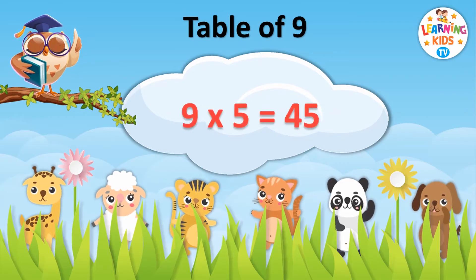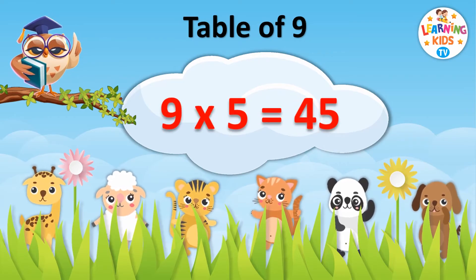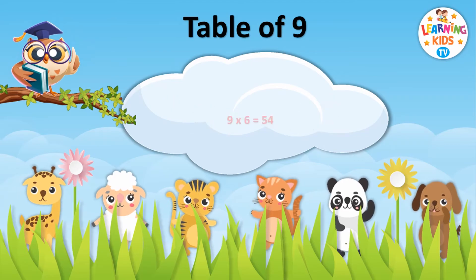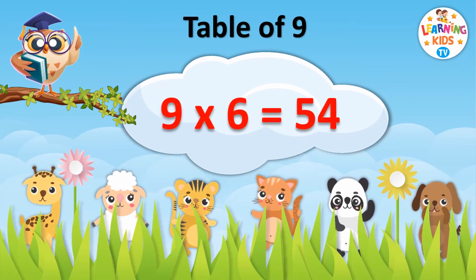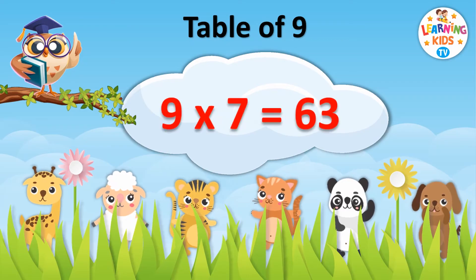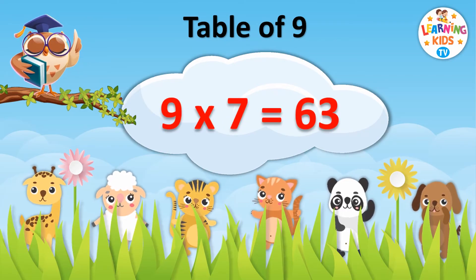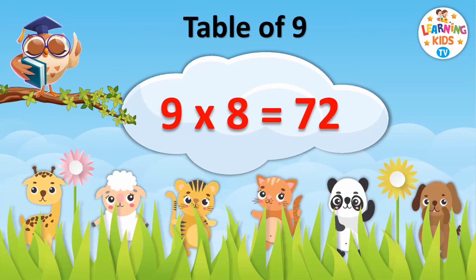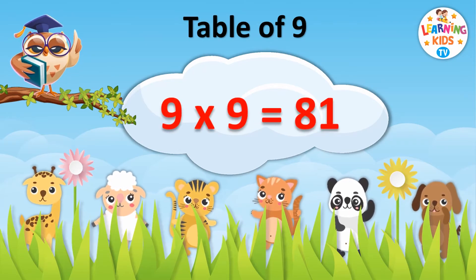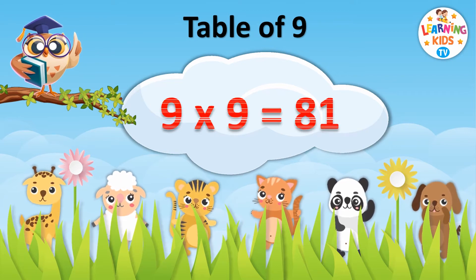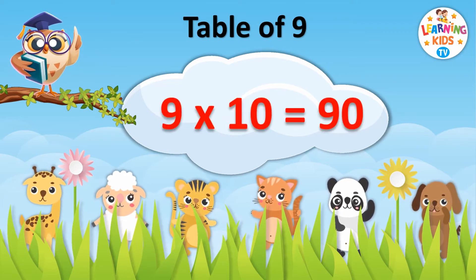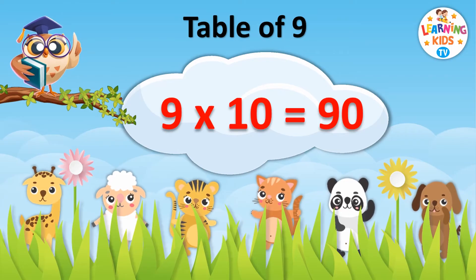Nine fives are forty-five. Nine sixes are fifty-four. Nine sevens are sixty-three. Nine eights are seventy-two. Nine nines are eighty-one. Nine tens are ninety.